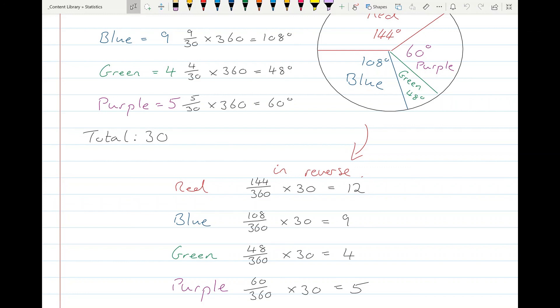So you can go from the amount of selections into degrees, and then you can go from degrees back to the amount of selections. That's designing a pie chart, a very useful way of displaying data. Hope you found it useful.